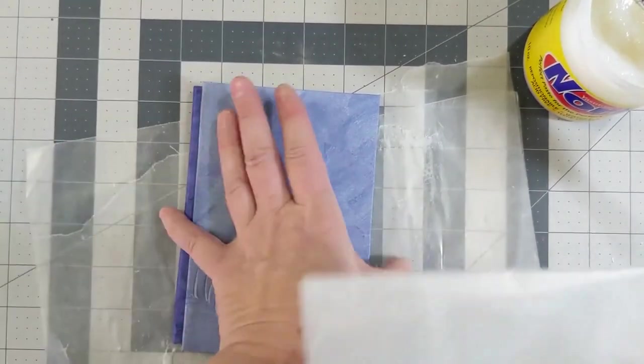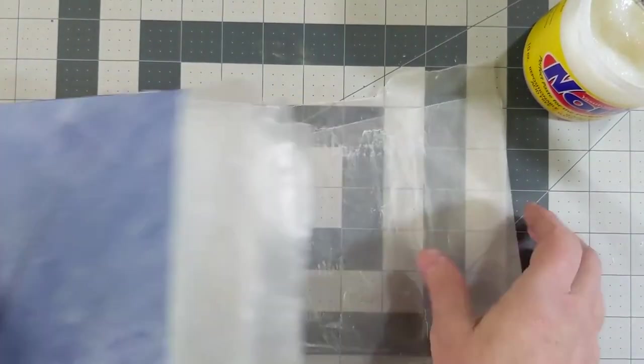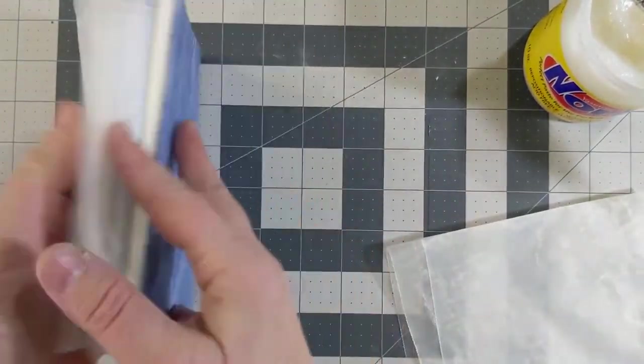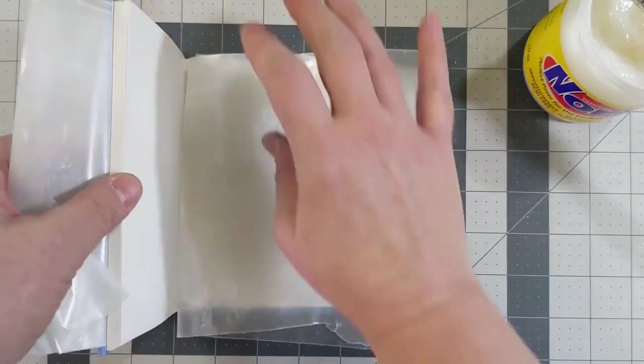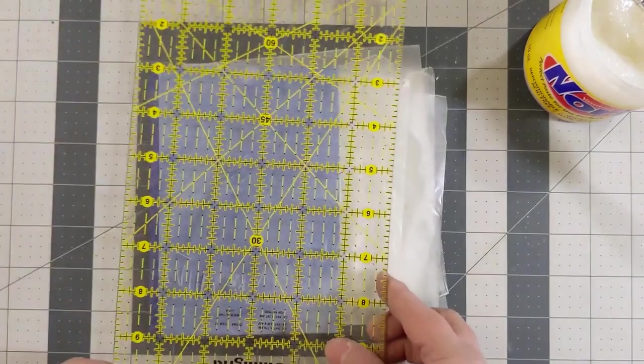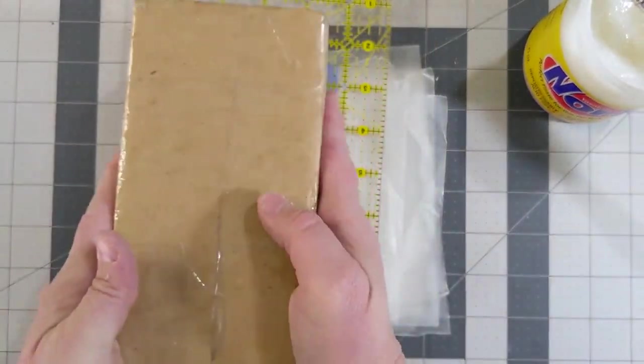Put waxed paper between the inside covers on both sides, wrap it in waxed paper, and then put it under a brick or a weight. And you're done!